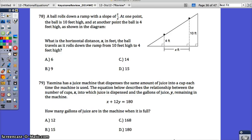Let's look at 78. A ball rolls down a ramp with a slope of 2 thirds. At one point the ball is 10 feet high, and at another point the ball is 4 feet high, as shown in the diagram. What is the horizontal distance x in feet that the ball travels as it rolls down the ramp from 10 feet high to 4 feet high? So this is kind of a weird question, but here's what we're asking. What is the horizontal distance that it happens to go from here to here? Now this distance is not horizontal, so this is the diagonal, but we don't want to find the distance between those two points. We want to know basically how far left or right did the ball travel. This is the distance I want to find.